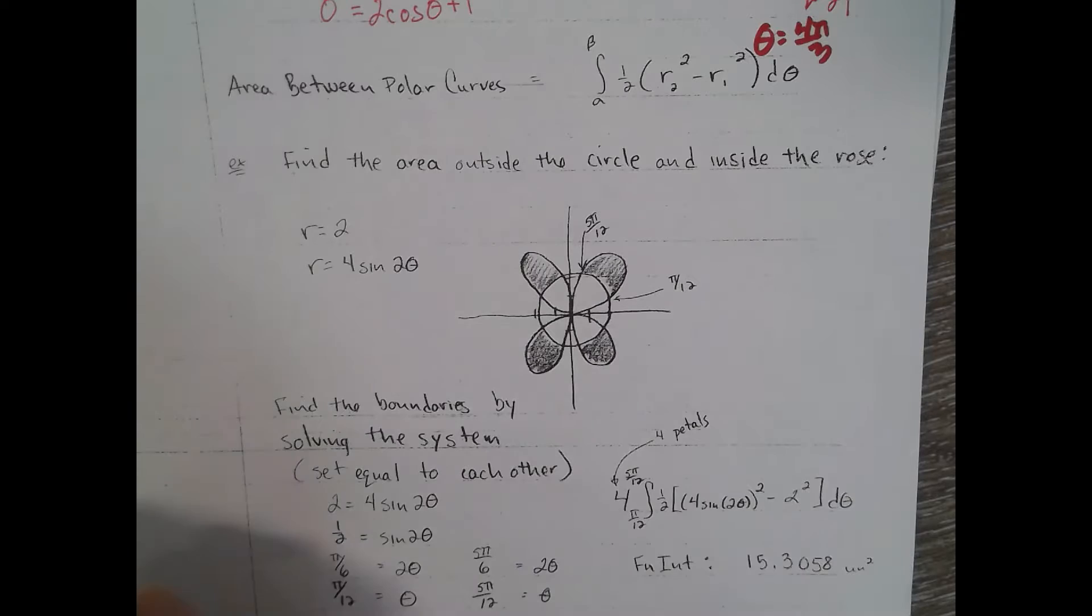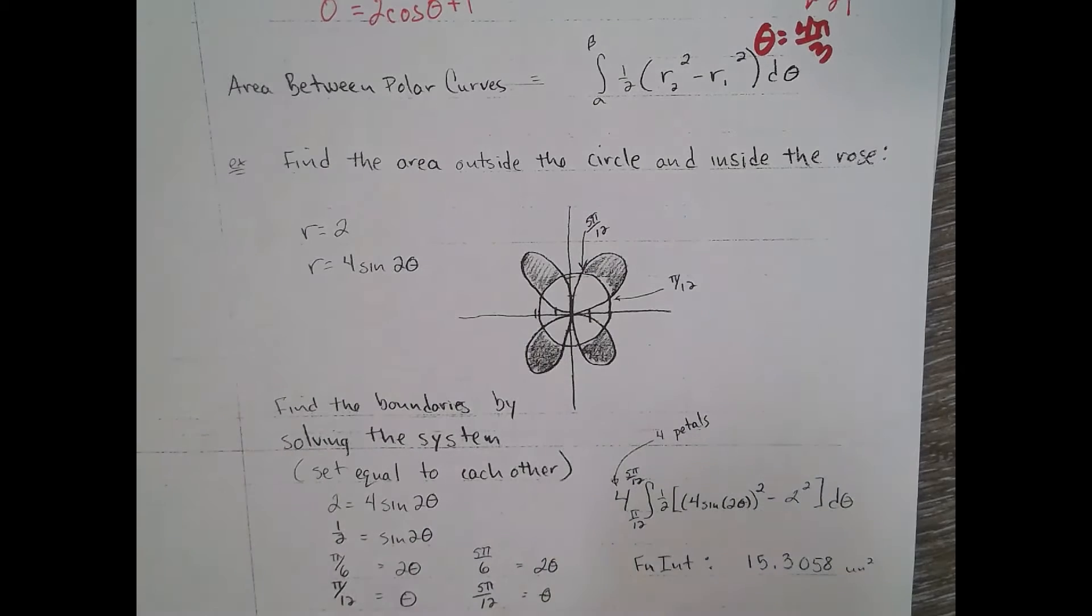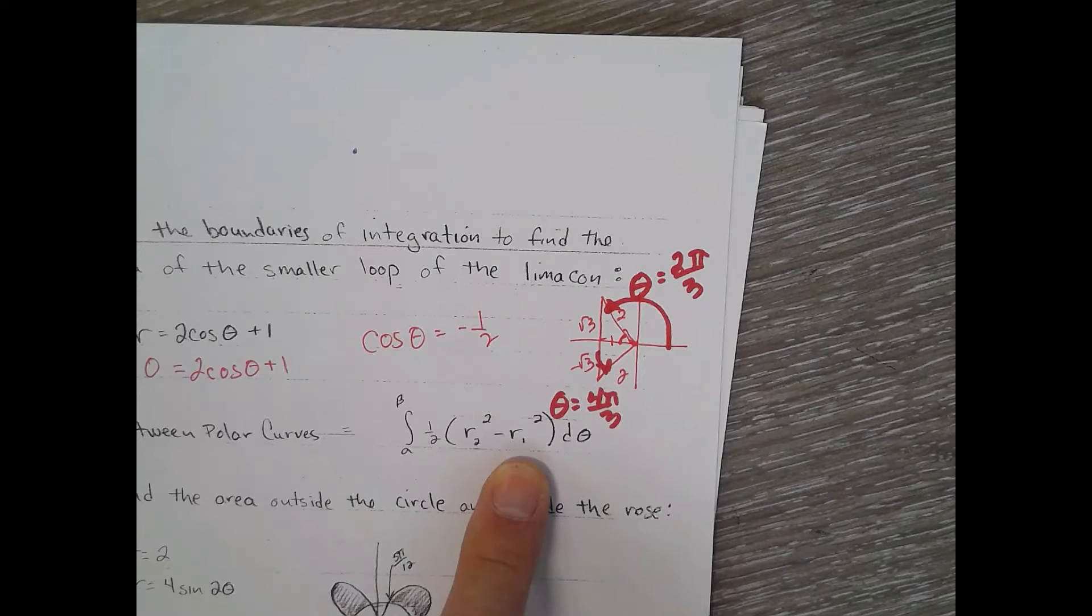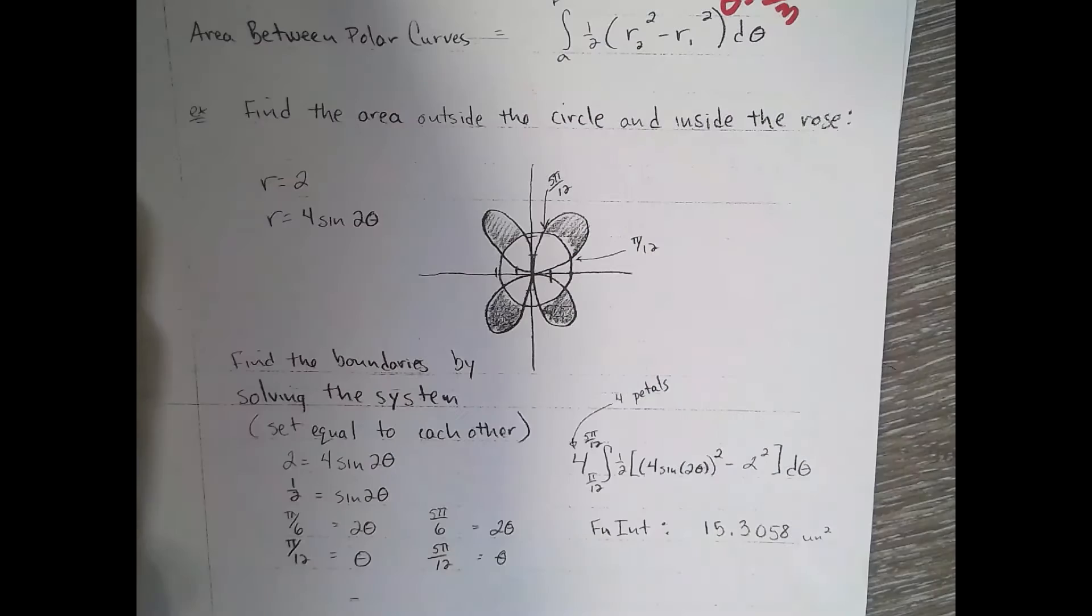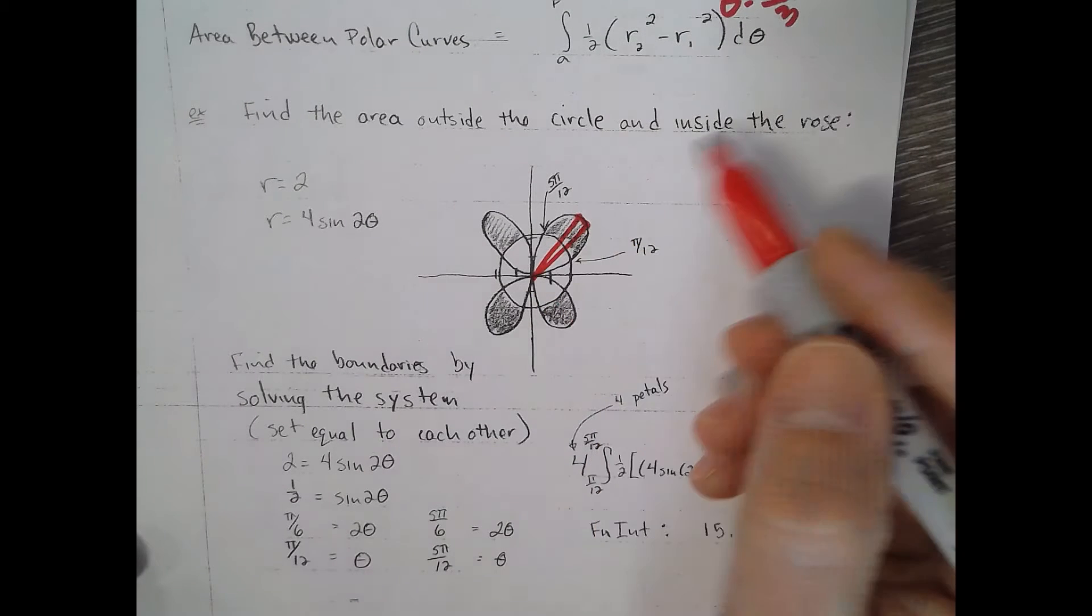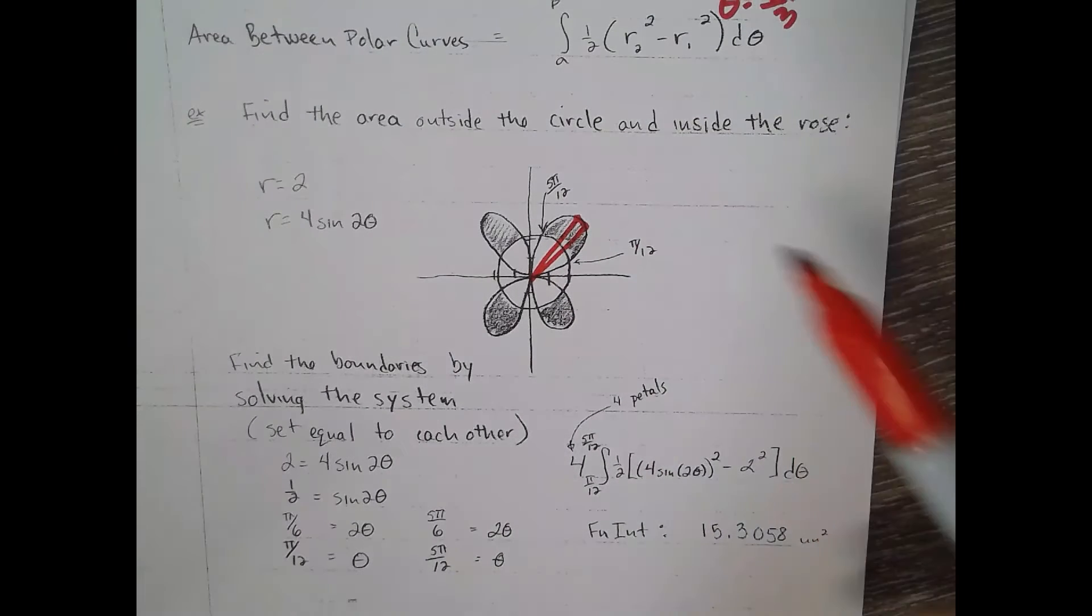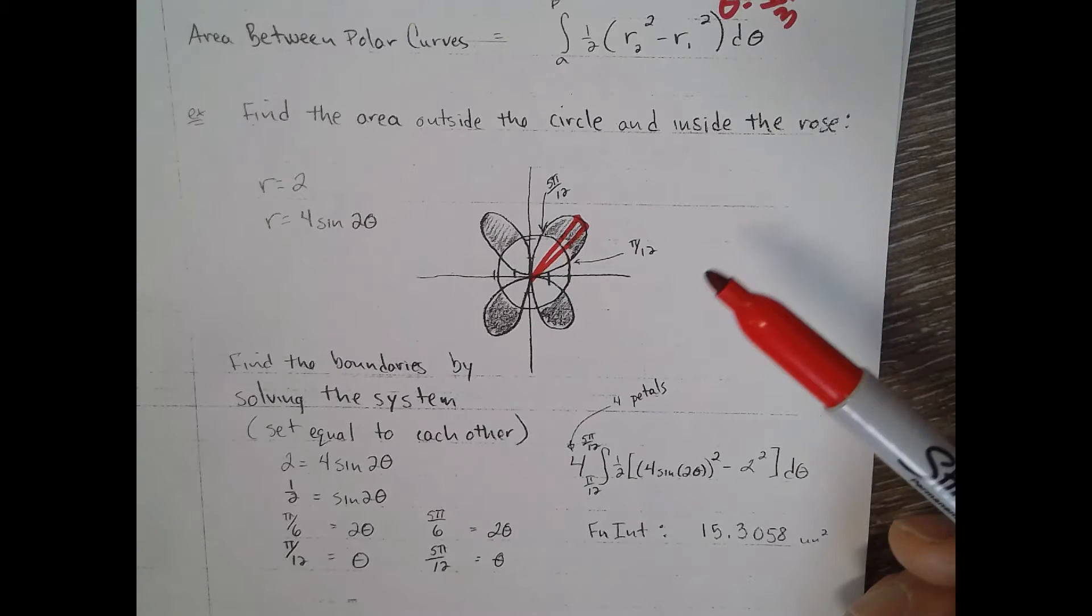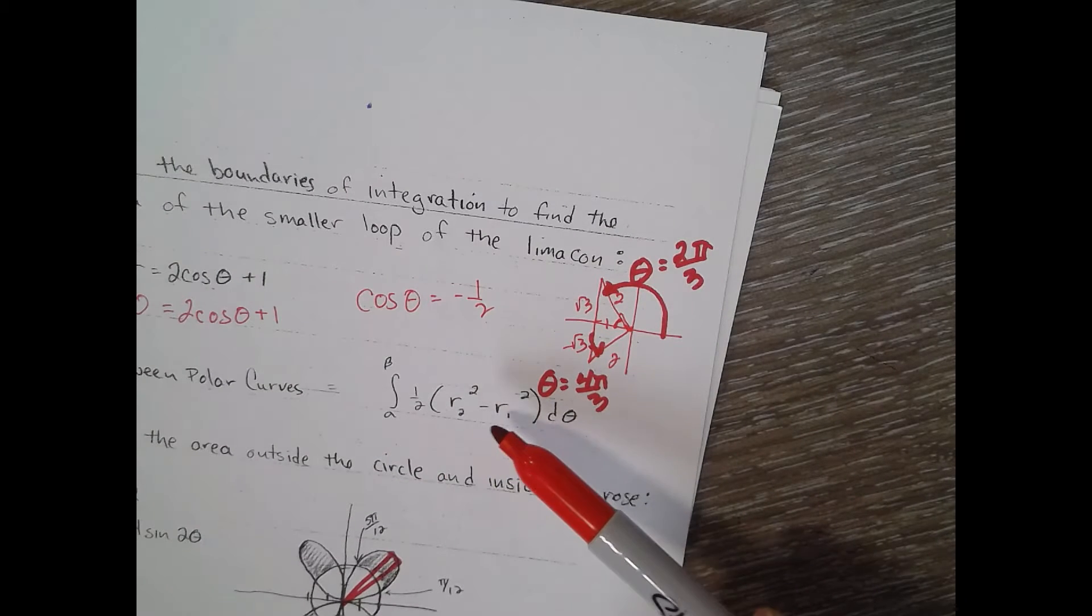All right, so if we were going to find the area of this shaded region here, you'd have to use one half, kind of like big R squared minus little r squared, from one angle to the other angle. Anytime you have a sector that has some shaded and some not shaded, it would be like the washer method where you do big R squared minus little r squared. It's one half that, our formula: one half big R squared minus little r squared d theta.